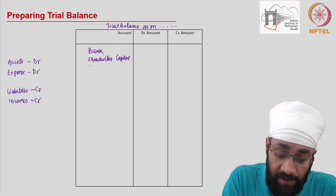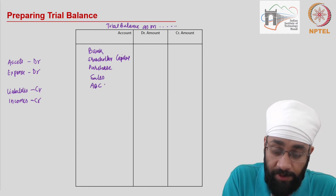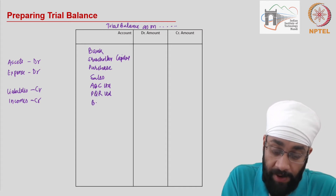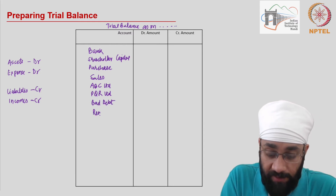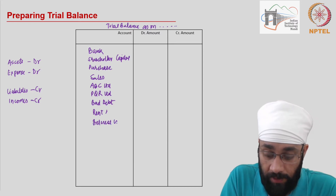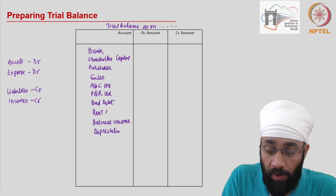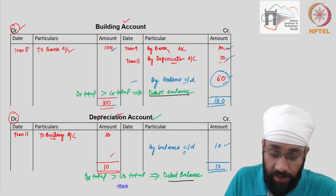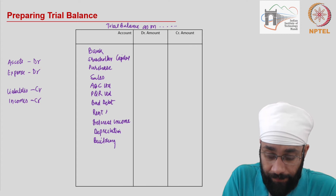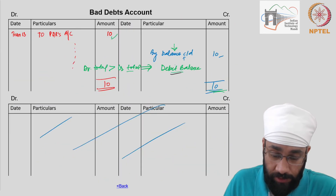We have purchase account, sales account, we have ABC Limited's account, we have PQR Limited's account, we had a bad debt account, we have a rent account, we had interest income, then we have depreciation. The order does not matter — which accounts you write first or later does not matter. We also have building account and bank loan account.